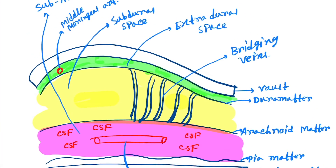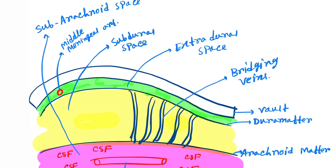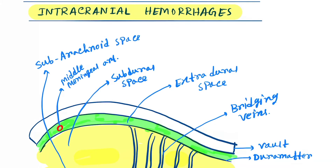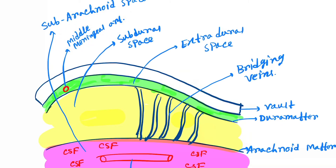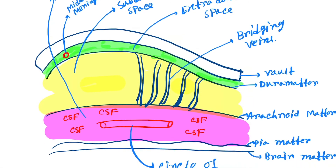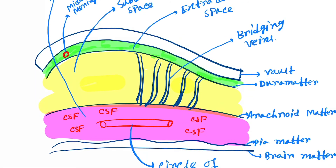If any injury is done to the extradural space — for example, a fracture of the temporal bone occurs — it will cause rupture of the middle meningeal artery, and that will cause extradural hemorrhage.